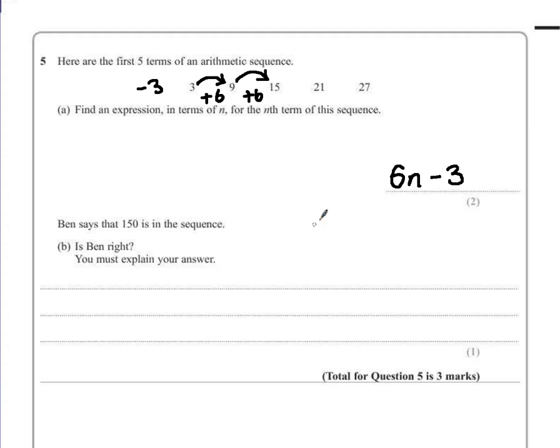One of the best ways is to use your rule for nth term and see if there is a solution for n. So if we substitute in this value and say 6n minus 3 is equal to 150. If we add 3, we would end up with 6n equals 153. So to find out what n is, we have to divide this value by 6.